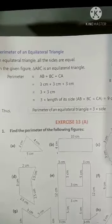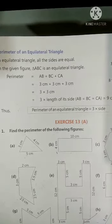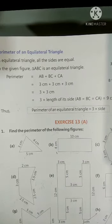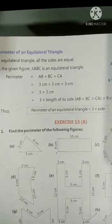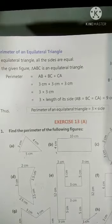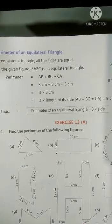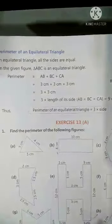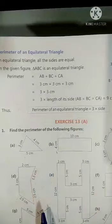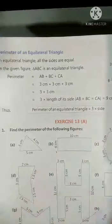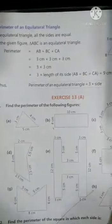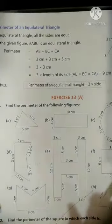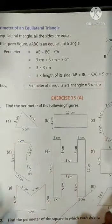Before starting the exercise, let me tell you children that in the previous video, I taught you a few formulas on how to find out the perimeter. I taught you the formula of perimeter of square, rectangle, and equilateral triangle. Here in Question No. 1, a few figures are given to us. So how do we find out the perimeter of these figures?